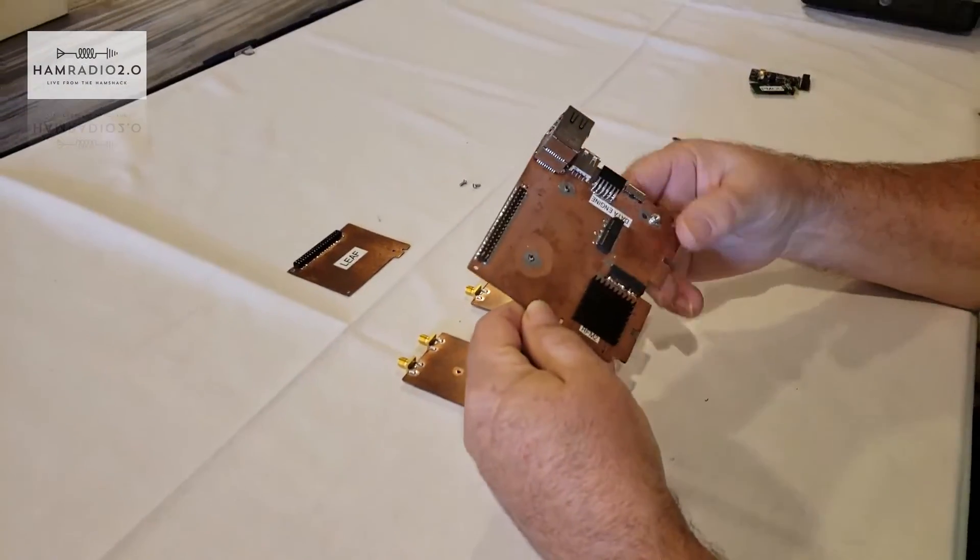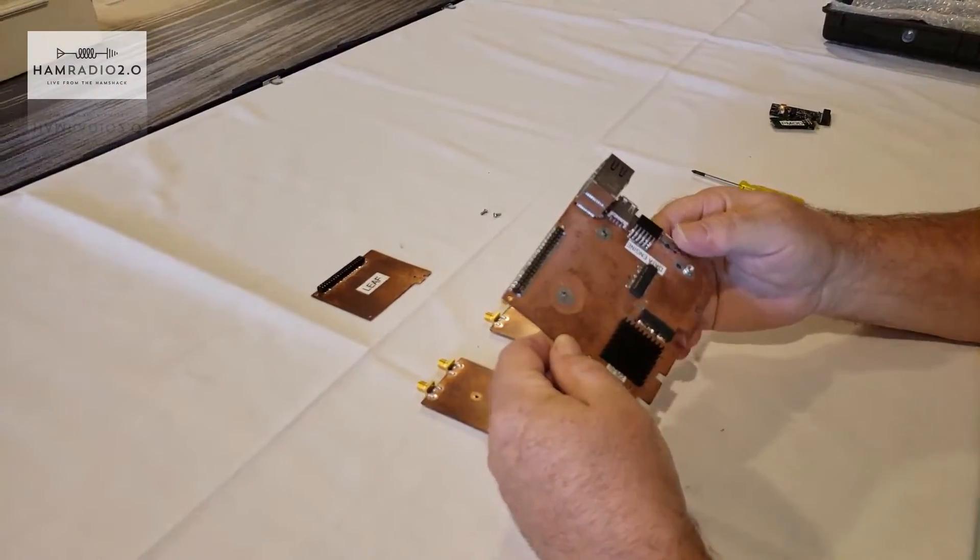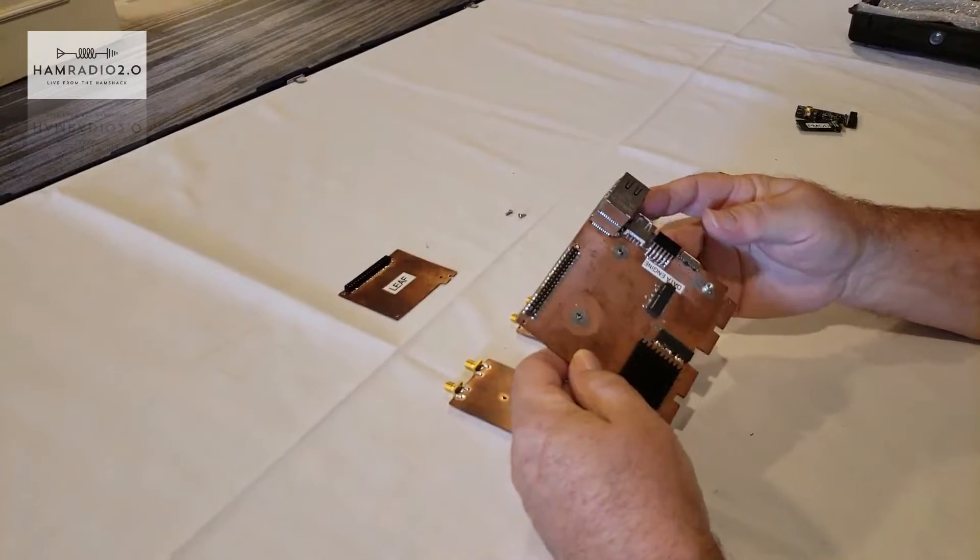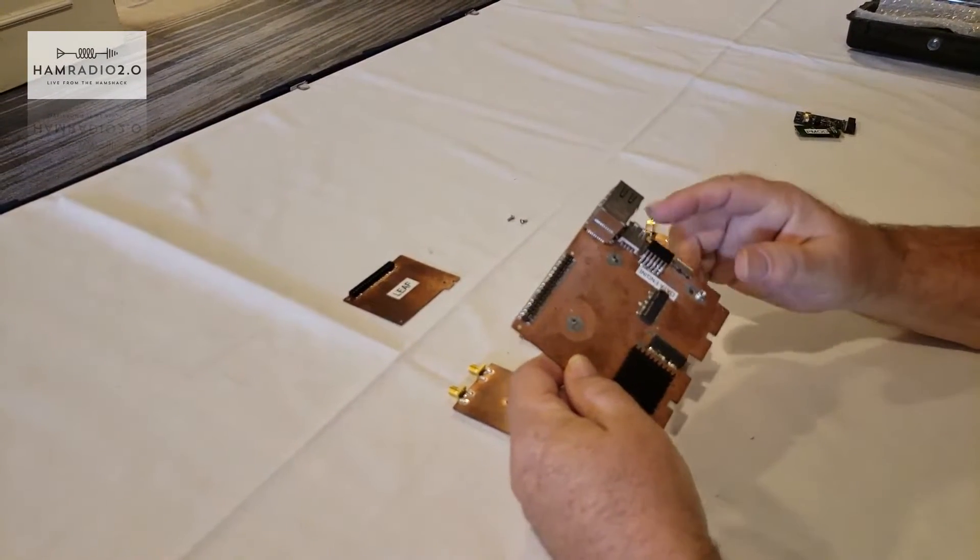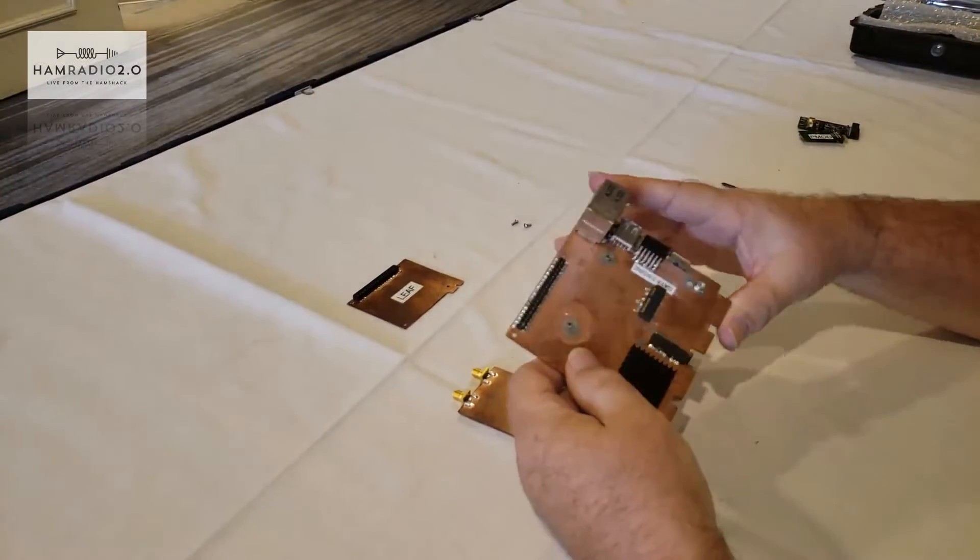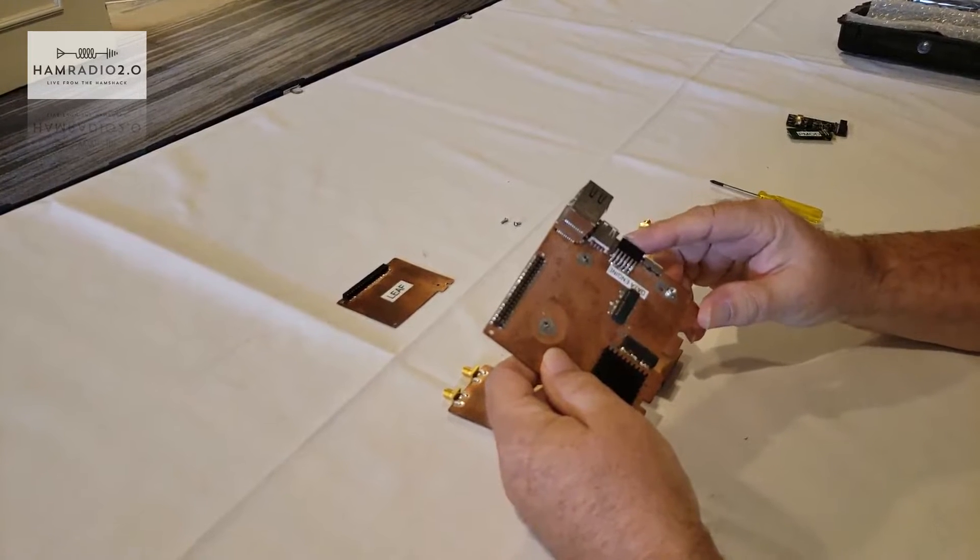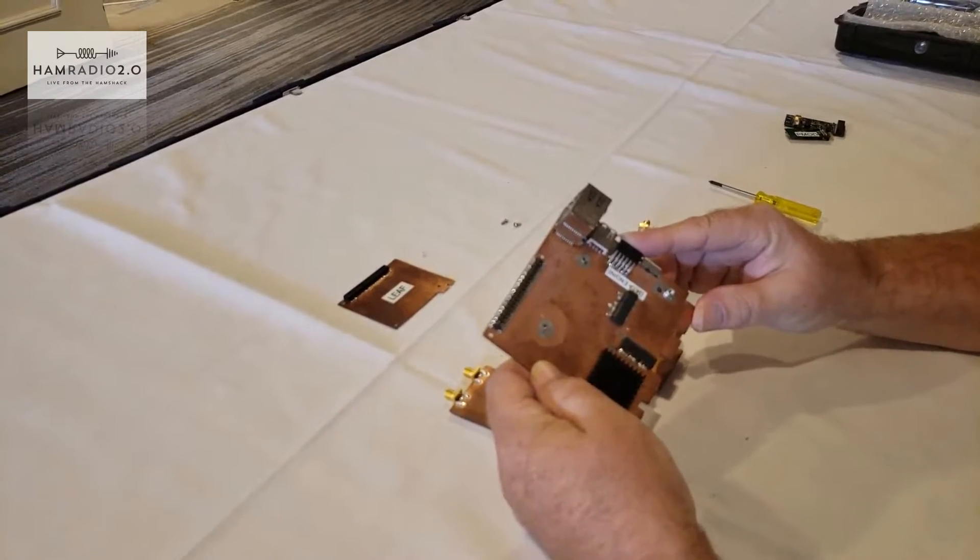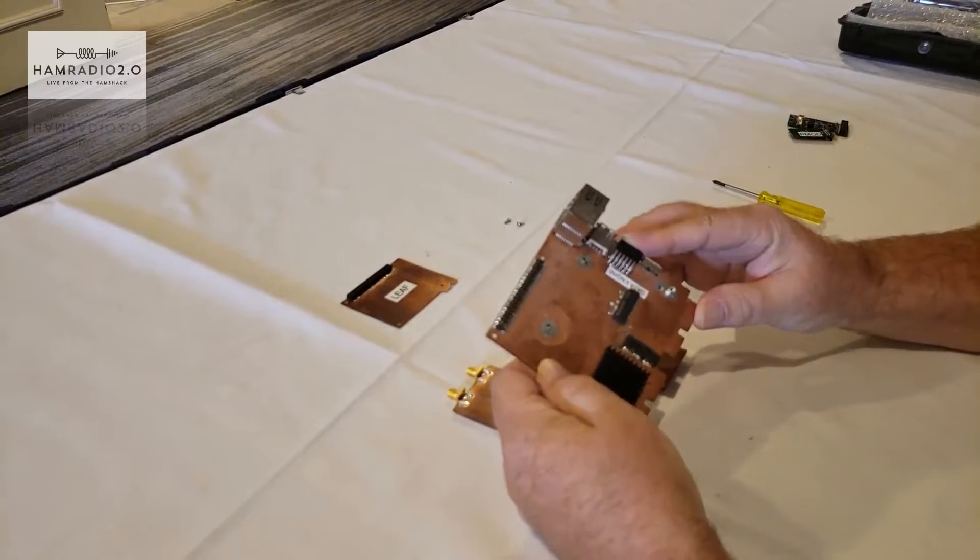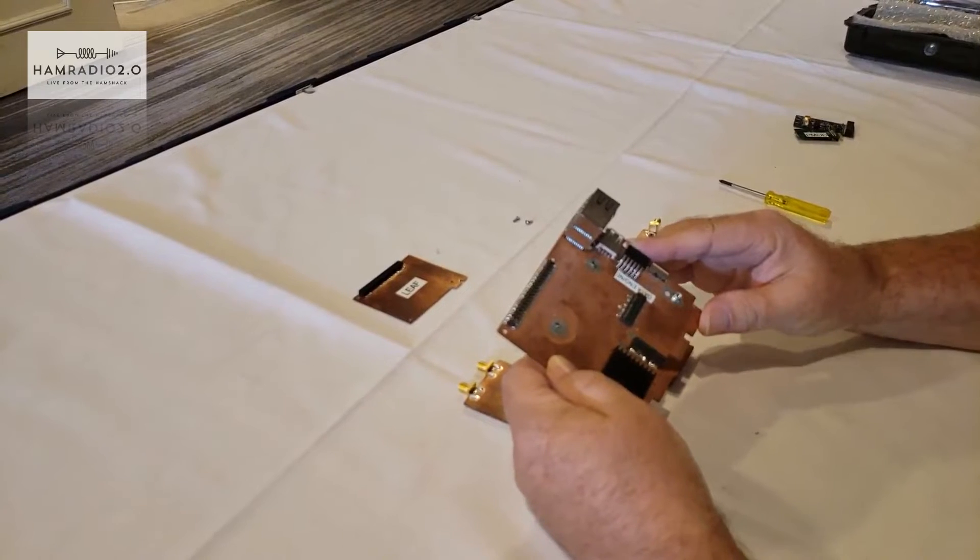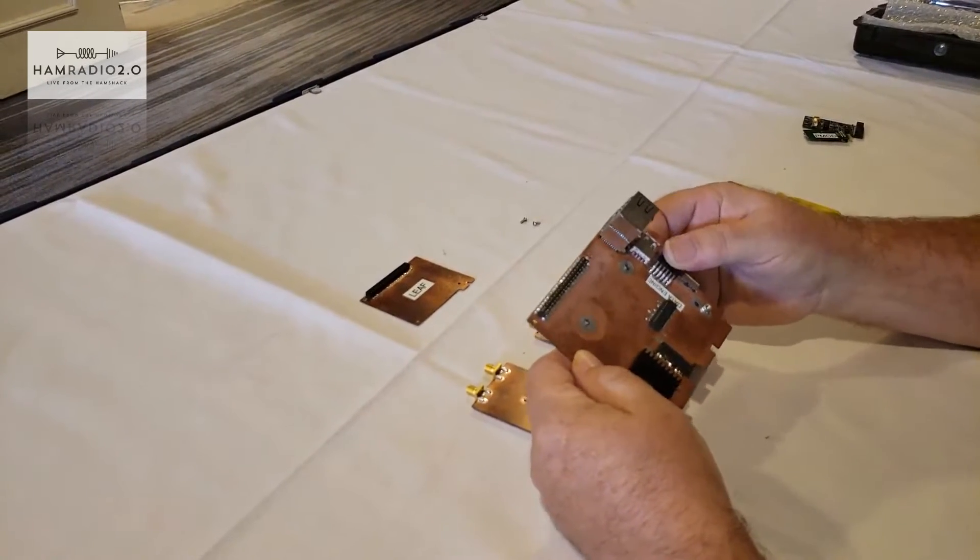This is the data engine board, kind of the heart of the whole system. It has all of the high-speed I/O which consists of USB 3, USB 2, and dual gigabit Ethernet ports. This additional low-speed I/O is called a PMOD port, and we're going to use this for a magnetometer interface for the space weather station.